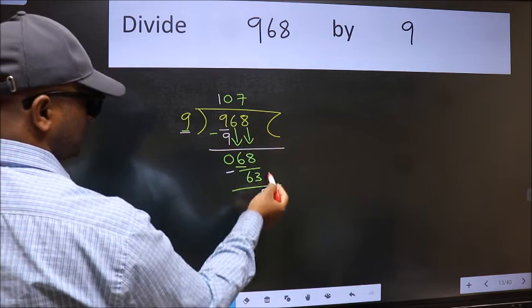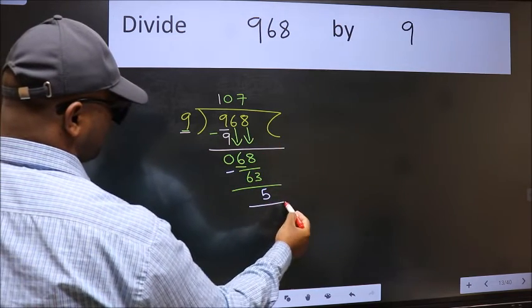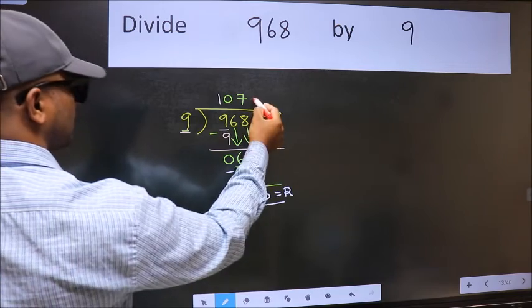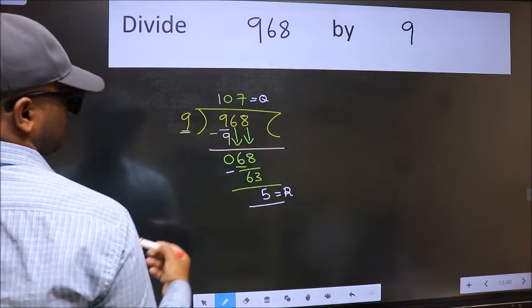No more numbers to bring it down. So we stop here. This is our remainder and this is our quotient.